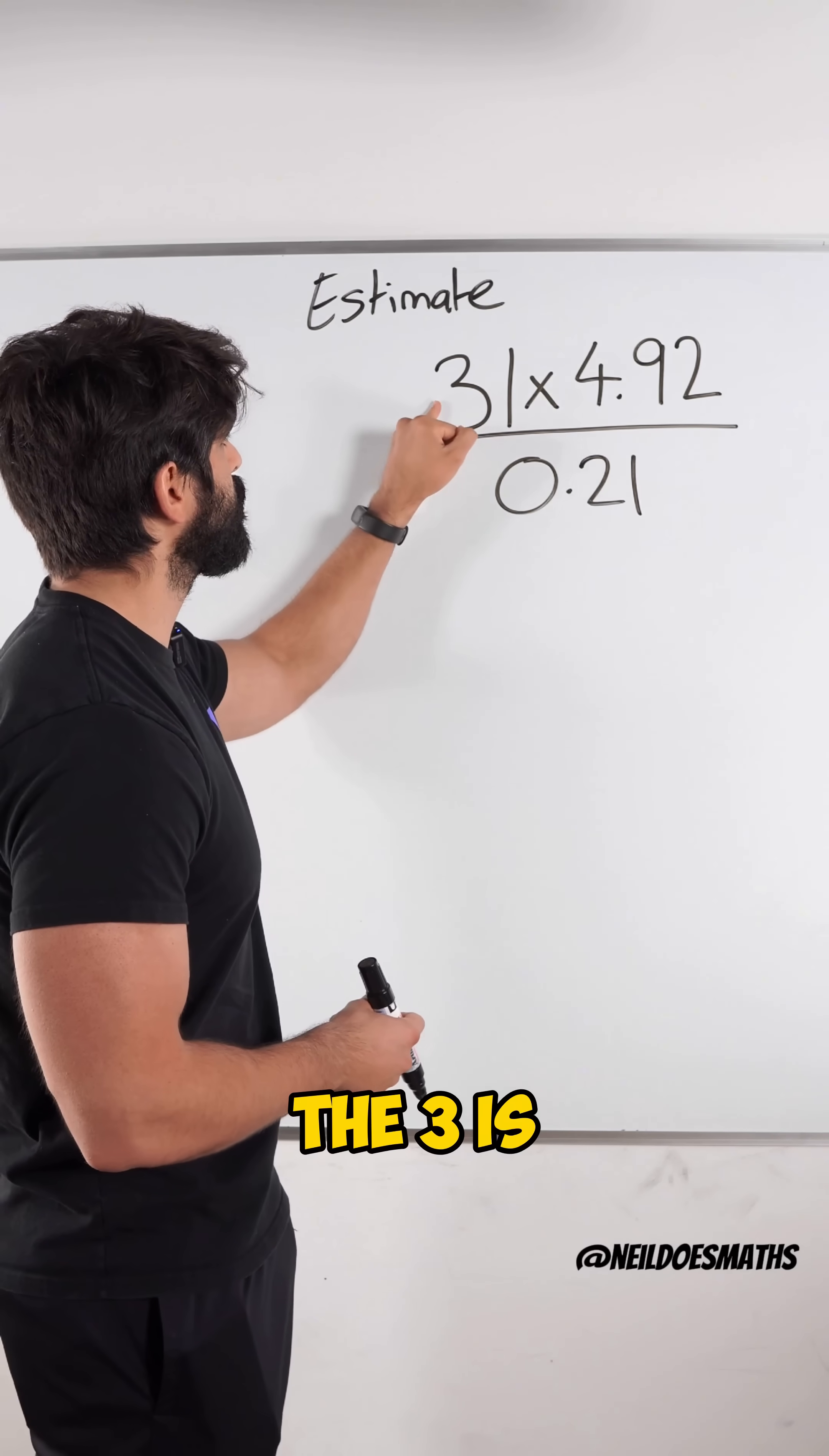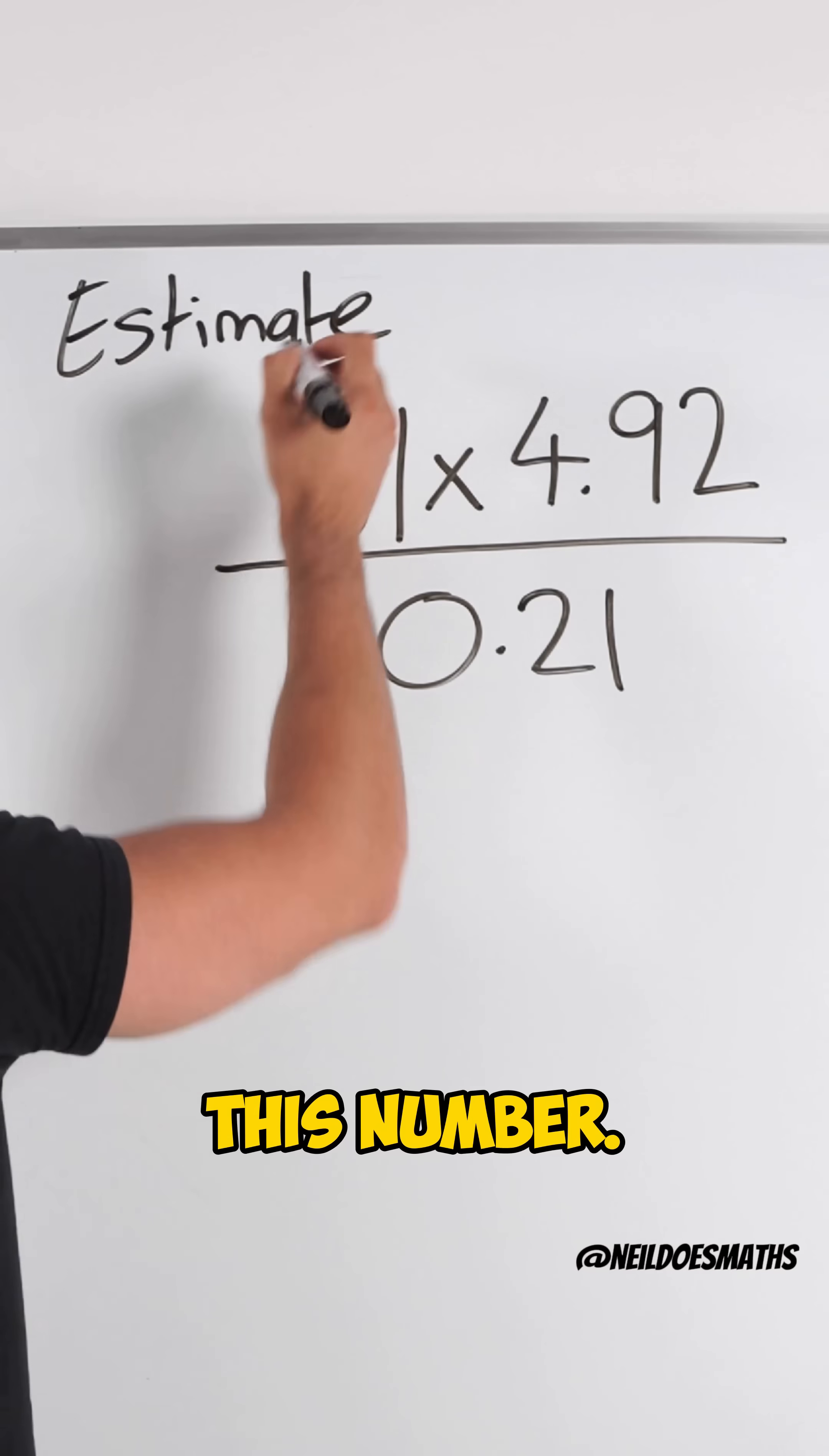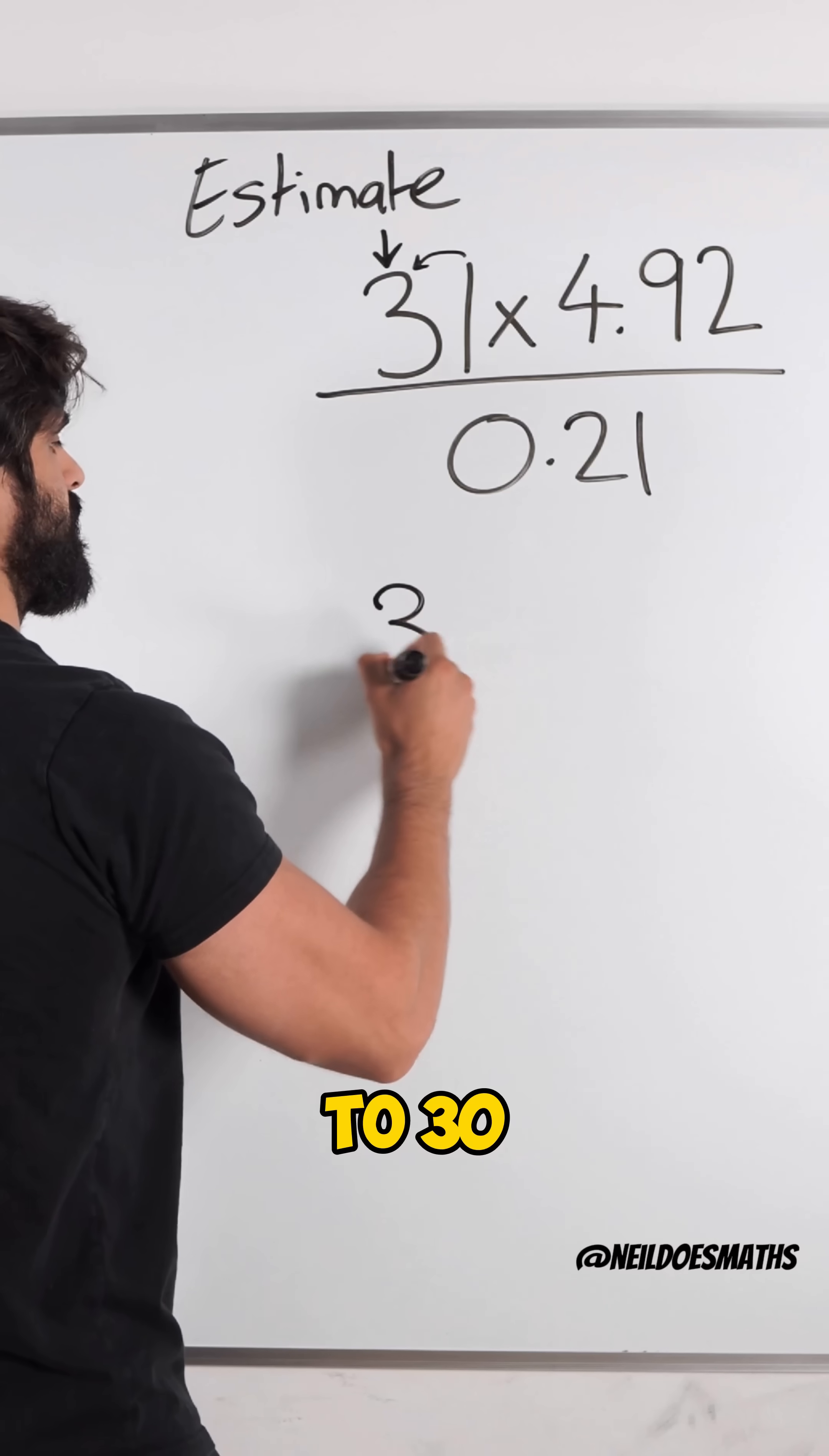So in 31, the 3 is the most important number. It is the biggest part of the number. So we would be rounding this number. Well the 1 makes sure that 31 is closer to 30 than it is to 40. So it rounds to 30.